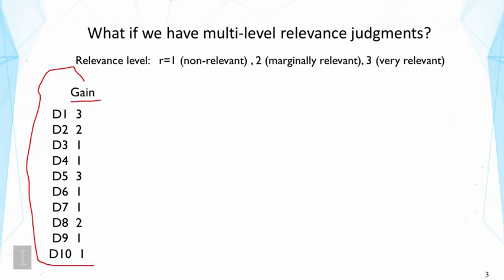So this gain basically can measure how much gain of relevant information a user can obtain by looking at each document. Looking at the first document, the user can gain three points. Looking at the non-relevant document, the user would only gain one point.